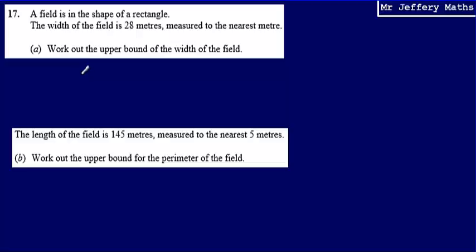Now, working out upper and lower bounds is fairly straightforward. To work out the upper bound, all I have to do is take my value that I've got, which is the width is 28, and then I take the degree to which it has been measured to. So here it's been measured to the nearest metre, so the nearest one metre. And what I do is I take 28 and add to it the degree by which it has been measured to, so the nearest one metre, and I divide that by 2.